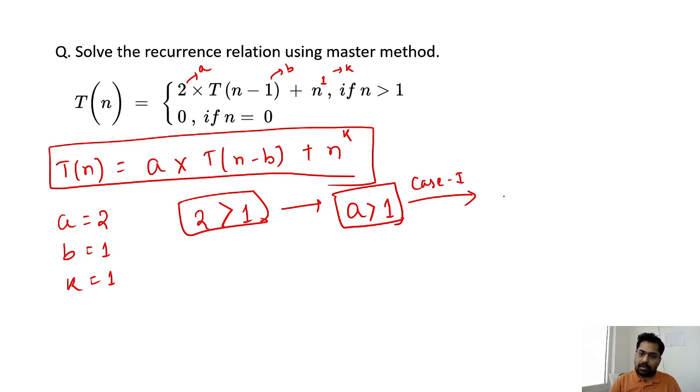As for case one, the method we have already declared is a to the power n by b into n to the power k. This is what we have to put for the time complexity.